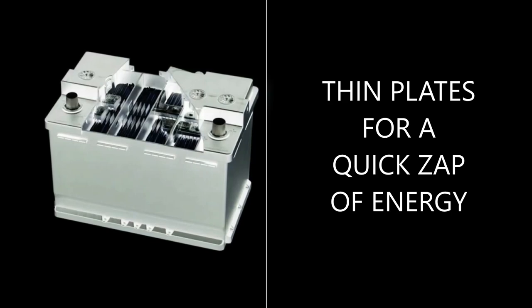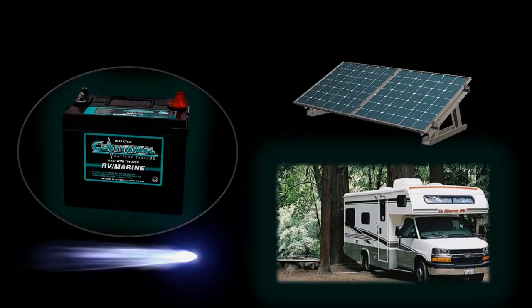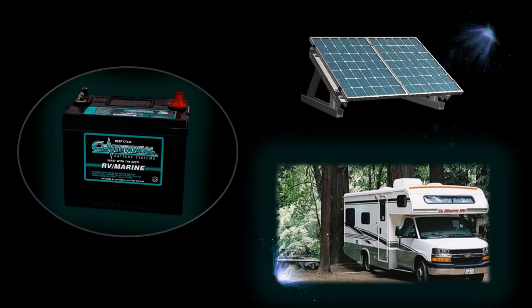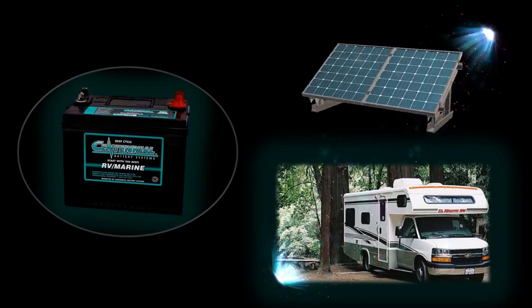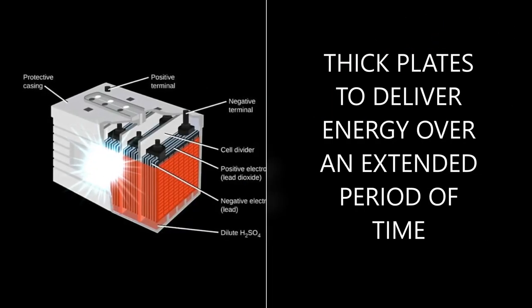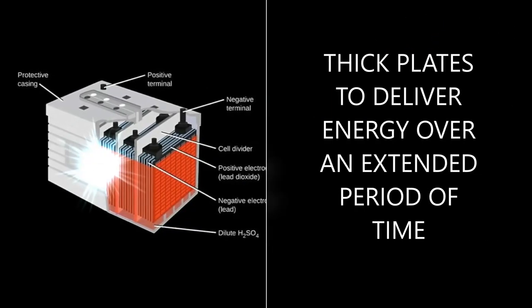Deep cycle batteries are designed to deliver energy over an extended period of time. There are many different deep cycle uses that depend on how much energy you need and for how long. If you could see inside a deep cycle battery, you would find plates that are thicker than a starting battery so that you can drain that energy out as needed.